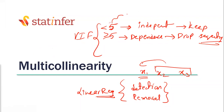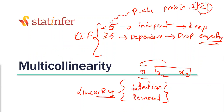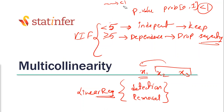Easiest way to avoid confusion: P-value is the probability value, and probability limits are between zero and one — probability can never go beyond one. So p-value is always less than one. The other one, VIF, goes beyond one. If you're getting confused between the two, remember p-value is always less than one, and VIF is the one going beyond one.